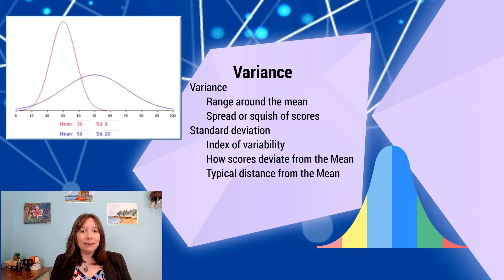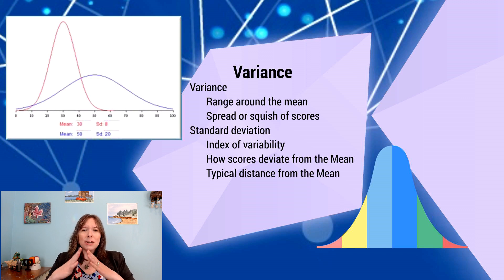Now that we've talked about central tendency in descriptive statistics, we also need to think about variance. So what is variance? Central tendency tells us the middle of the curve, but variance tells us the spread or squish of the curve. That is, we know it peaks in the middle of its normal curve and it has tails, but how squished or spread out are those tails? The variance is really the range around the mean.